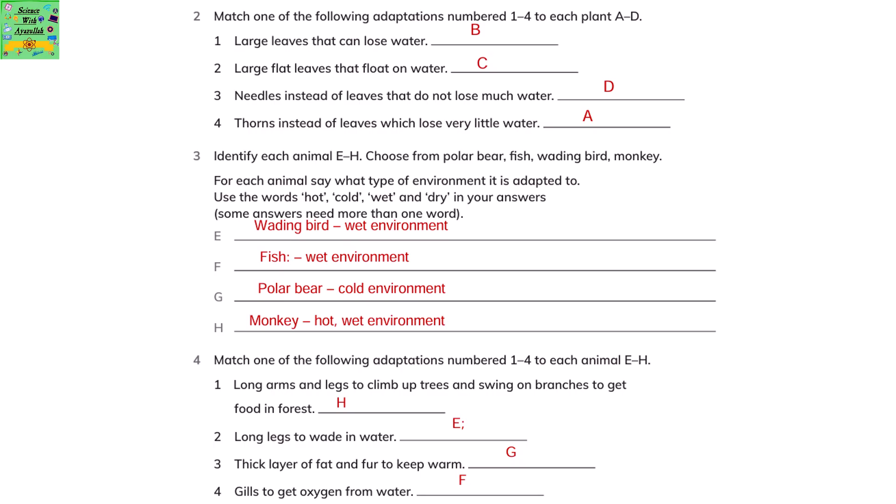A wading bird is adapted to a wet environment. Fish is adapted to a wet environment. Polar bear is adapted to a cold environment. The monkey is adapted to a hot and wet environment. The adaptations depend on where these animals or plants are usually found.